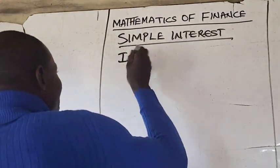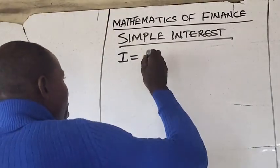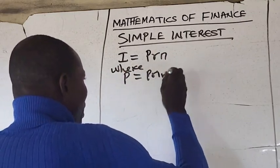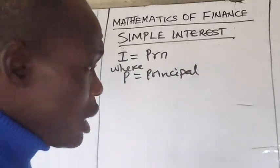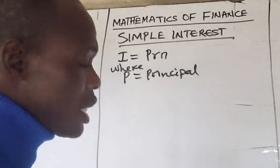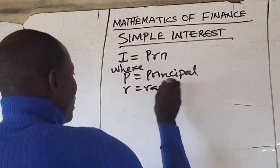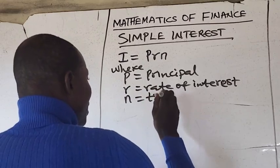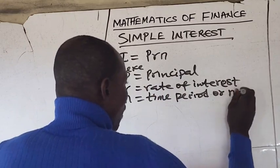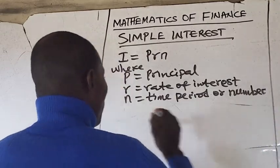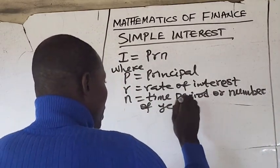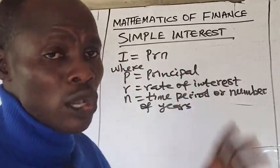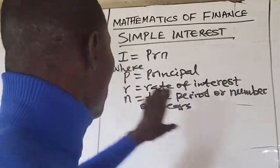Simple interest is calculated using the formula I = PRN, where P is the principal — the original money borrowed or invested. R is the rate of interest, and N is the time period, or number of years, in which the interest is payable or has become due.